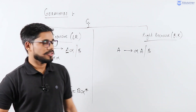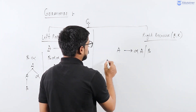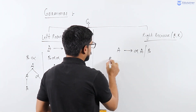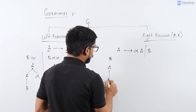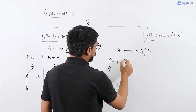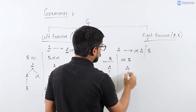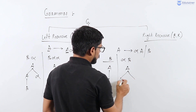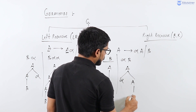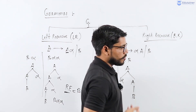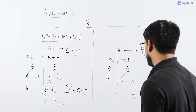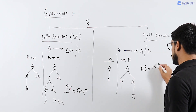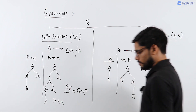In right recursive grammar, let us take a particular string, say beta. If you want to derive beta, you can derive it in one step. If you want to derive alpha followed by beta, it will take two steps: A derives alpha A, and this A derives beta. So the regular expression produced in right recursive grammar is alpha star followed by beta.